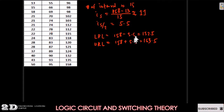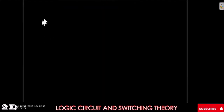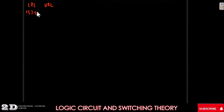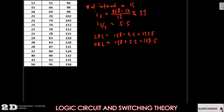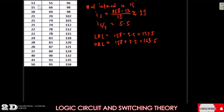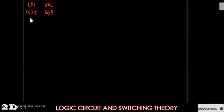Now we go to building the frequency distribution table on a blank page. Our lower real limit starts at 152.5 and upper at 163.5. Our lowest data is 13. To cover all data, we subtract 11 successively: 152.5 minus 11 gives 141.5, then 130.5, then 119.5.